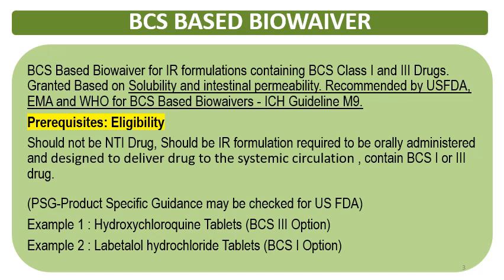The ICH guideline M9 discusses BCS-based biowaivers in detail. The biowaivers are granted mainly on the solubility of the API. If the API has high solubility and the intestinal permeability — permeability may be high or low — the main requirement is high solubility.